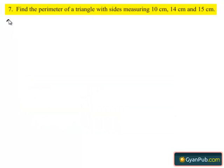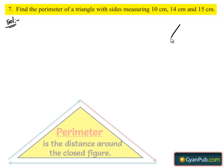Let's do the solution. We have to find the perimeter of a triangle. So let us consider a triangle ABC.